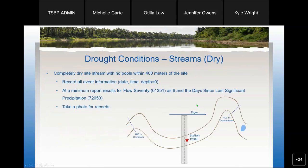Moving on to streams: if the stream is absolutely completely bone dry within 400 meters of the site, we are going to record all the event information as we normally would. We would just report a depth of zero, and at a minimum we're going to report a flow severity value of six, which is dry, and days since last rain. You can report any other parameters such as air temperature that would apply without having actual water in the stream. Again, take your photos for the records.